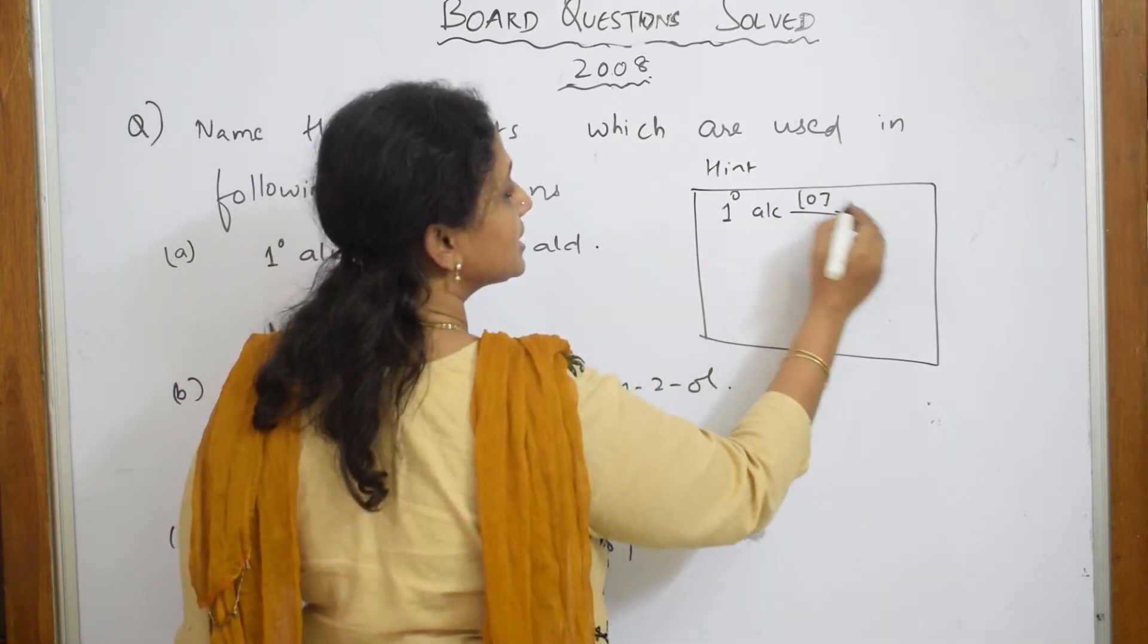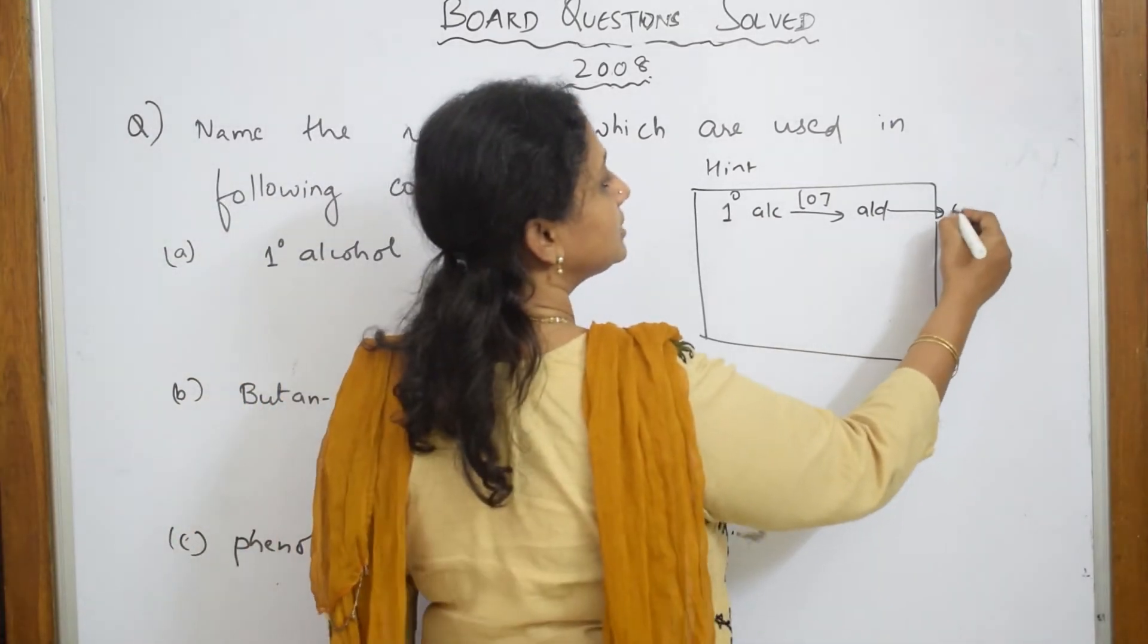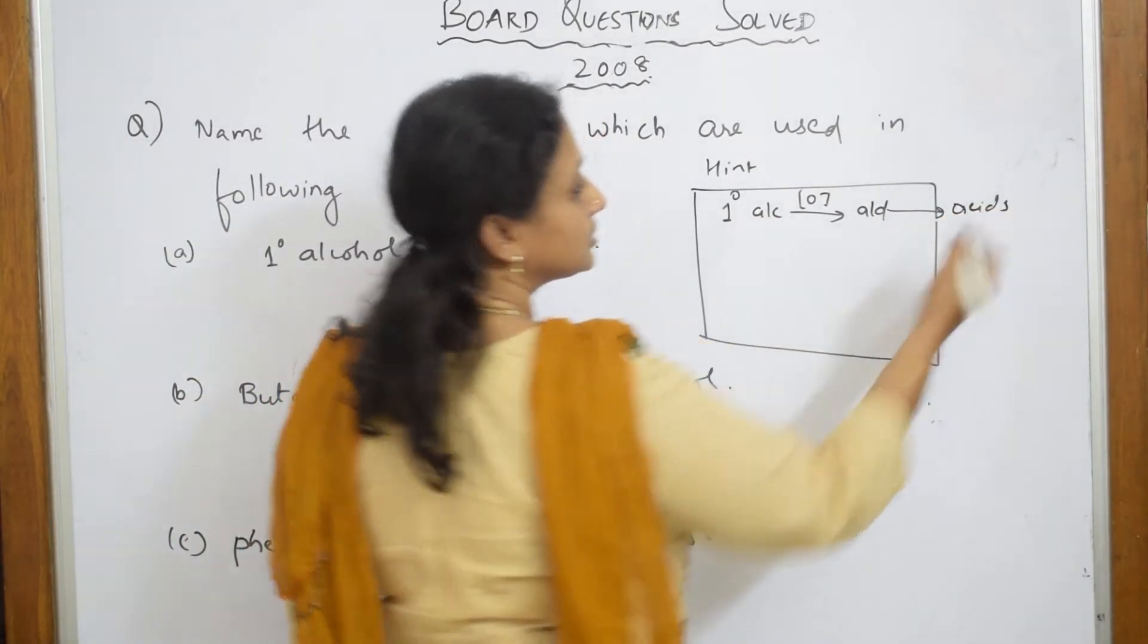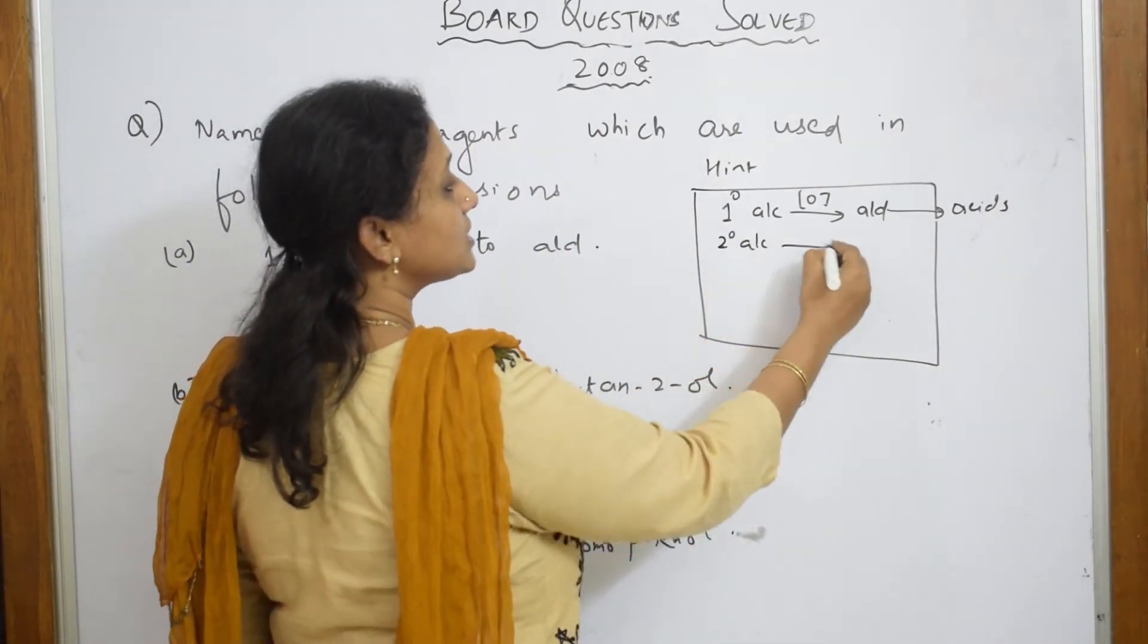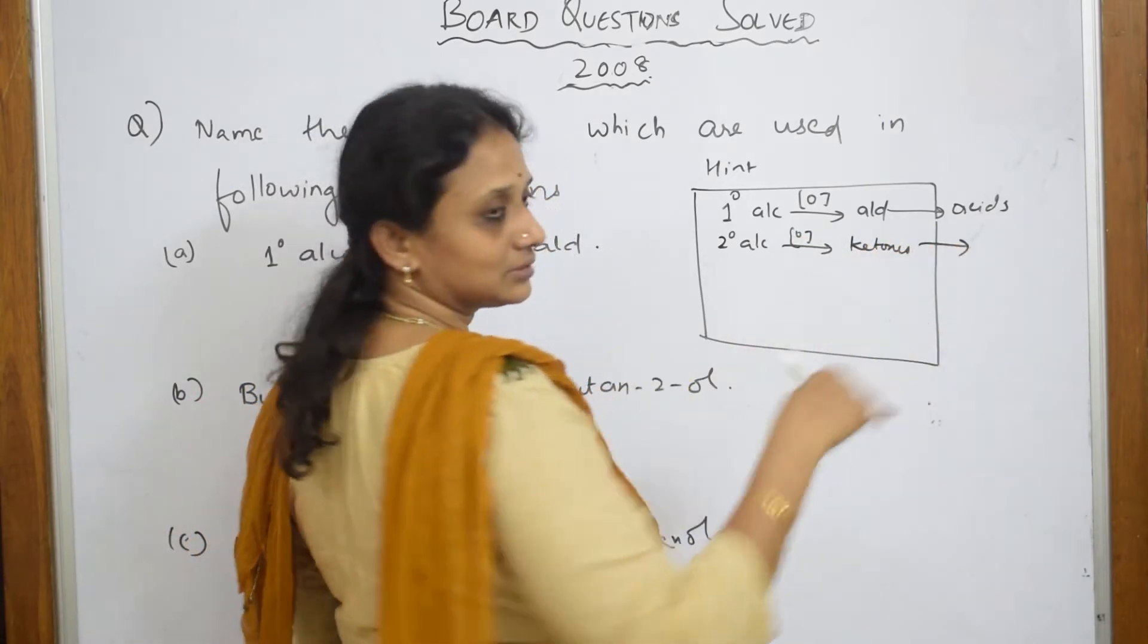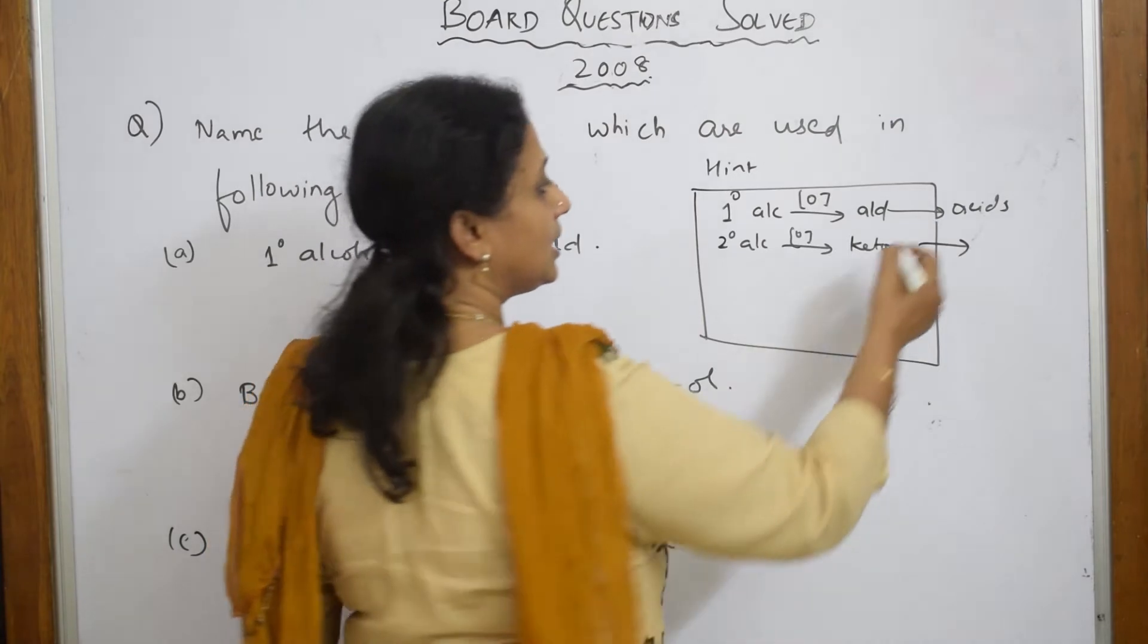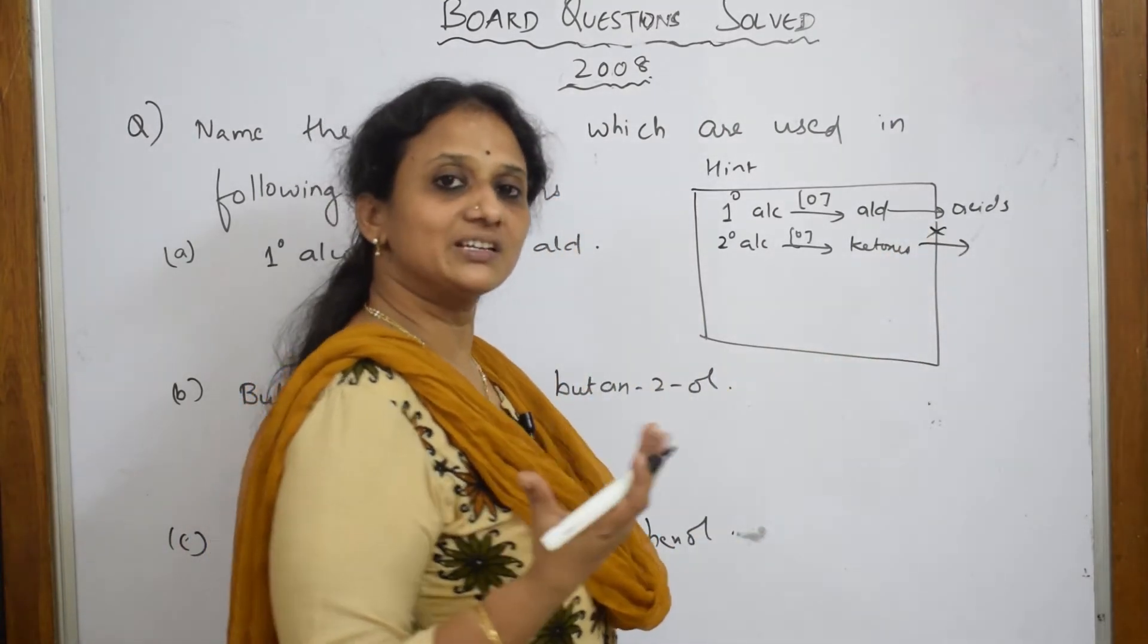Aldehydes further get oxidized to acids. Then we said secondary alcohols on oxidation gives us ketones. Ketones resist further oxidation unless you provide vigorous conditions to that particular reaction.